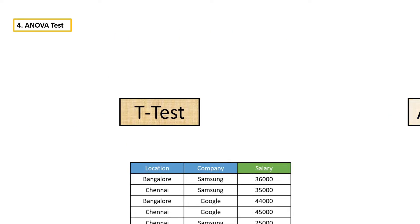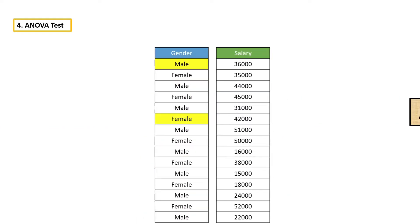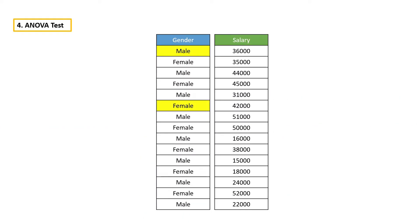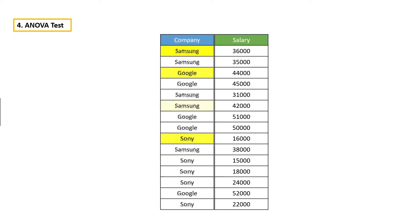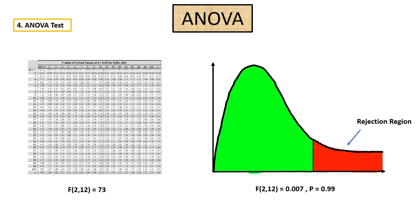But when to use t-test and when to use ANOVA? If we have two categories in a feature, then we have to use t-test. Or if we have three or more categories in a feature, then we have to use ANOVA. In this video, we are gonna learn everything about ANOVA.